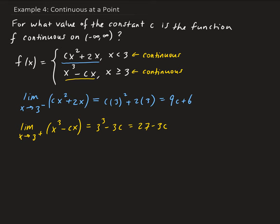In order for this function to be continuous, the left and right hand limits have to be equal. So we set these two expressions equal to each other to solve for C. We have 9C plus 6 equals 27 minus 3C. By setting the left and right hand limits equal, this allows us to find the C that makes these expressions equal.